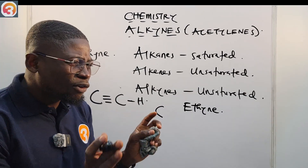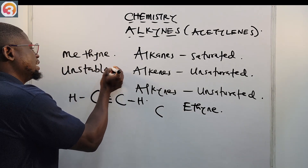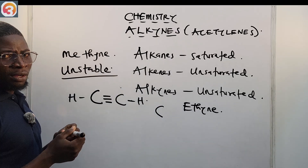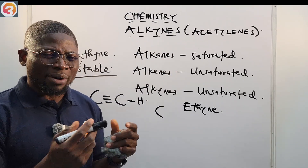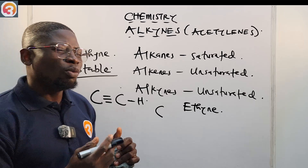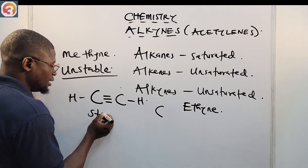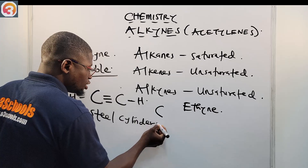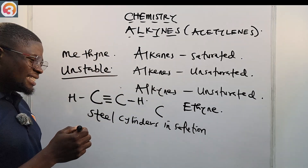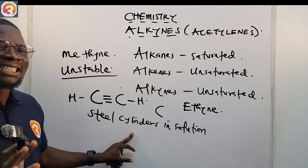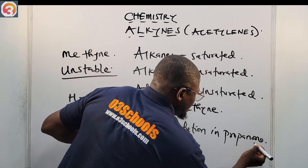The purest form of ethyne is highly unstable and very endothermic. Because of how unstable it is, it cannot simply be compressed and kept. Instead, we store ethyne in steel cylinders in solution — specifically in propanone — at a pressure of 12 atmospheric pressure. Take note of that, as it is a past question from JAMB.